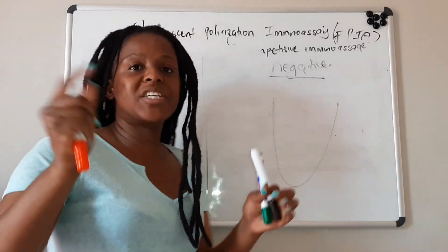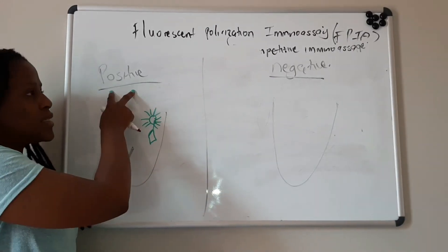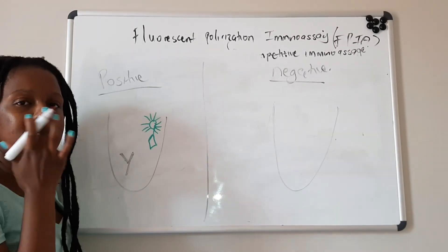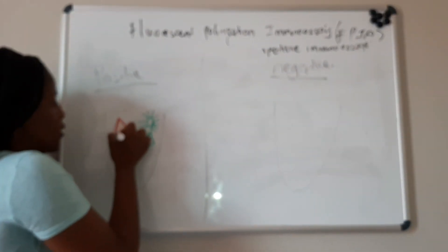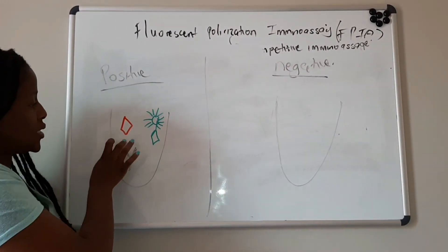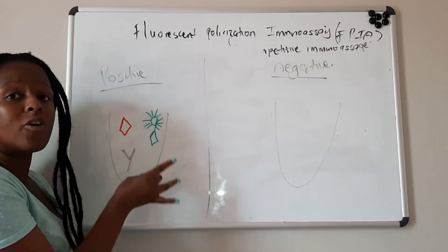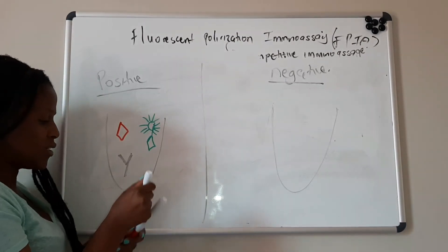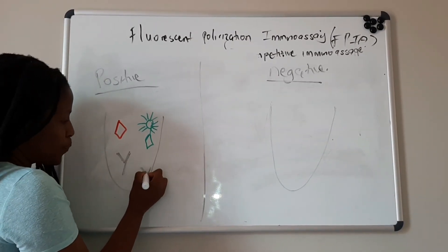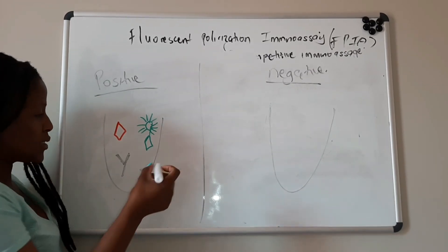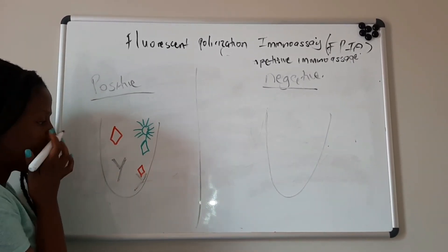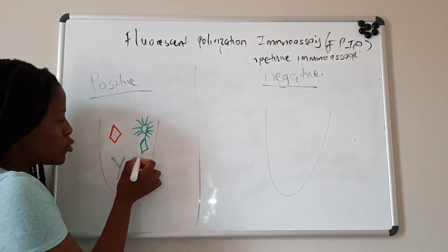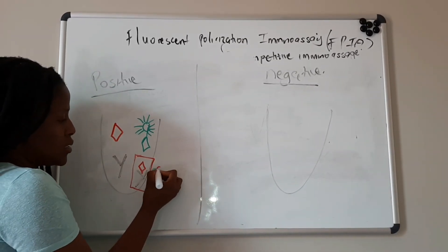When the patient sample is added — in this positive scenario — the patient serum contains the BANS antigen. So the patient antigen and the reagent antigen tagged with the fluorescent molecule are going to compete for the binding site. Since the patient is positive, the anti-BANS antibody and the BANS antigen from the patient will form an immune complex. This complex is small.